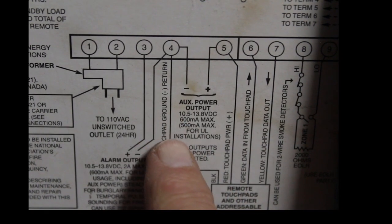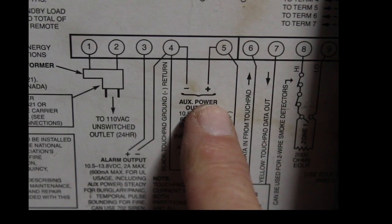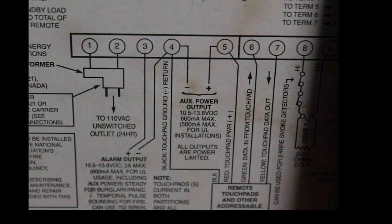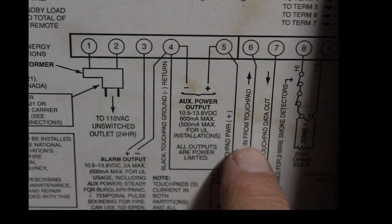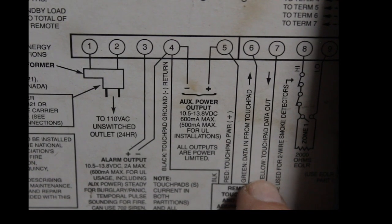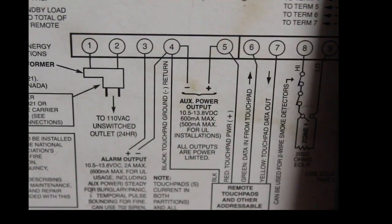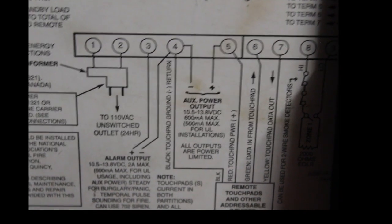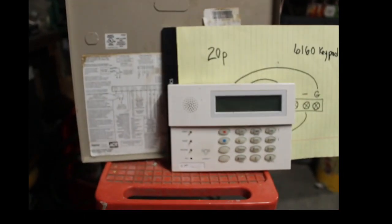Alright, so you got four, is your ground, five is your positive, and then six just like over here goes to, it says green or data in, and the next one over is yellow or data out. Those are your only four connections you need to make from your keypad to your control panel.